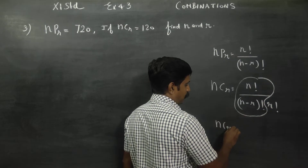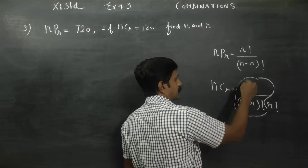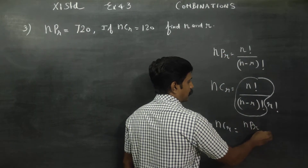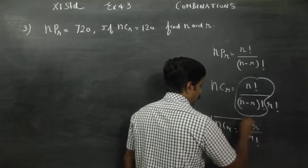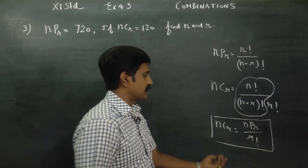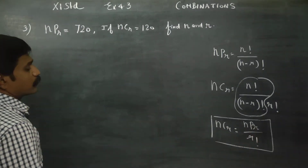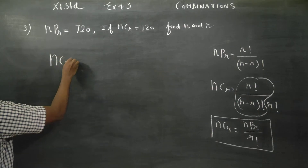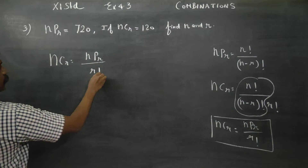NCR can also be written as NPR by R factorial. I am going to use this derivation: NCR is equal to NPR by R factorial.